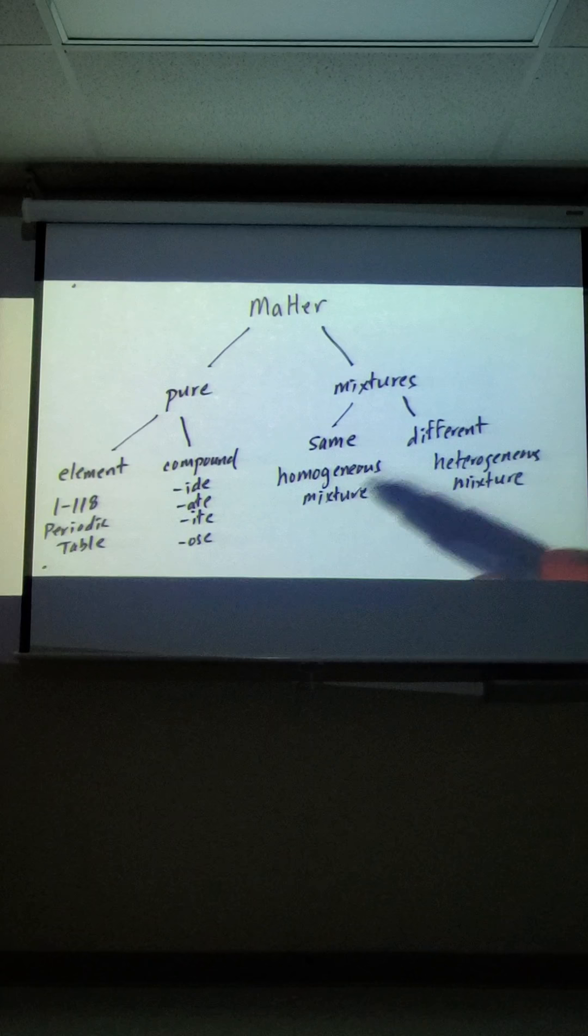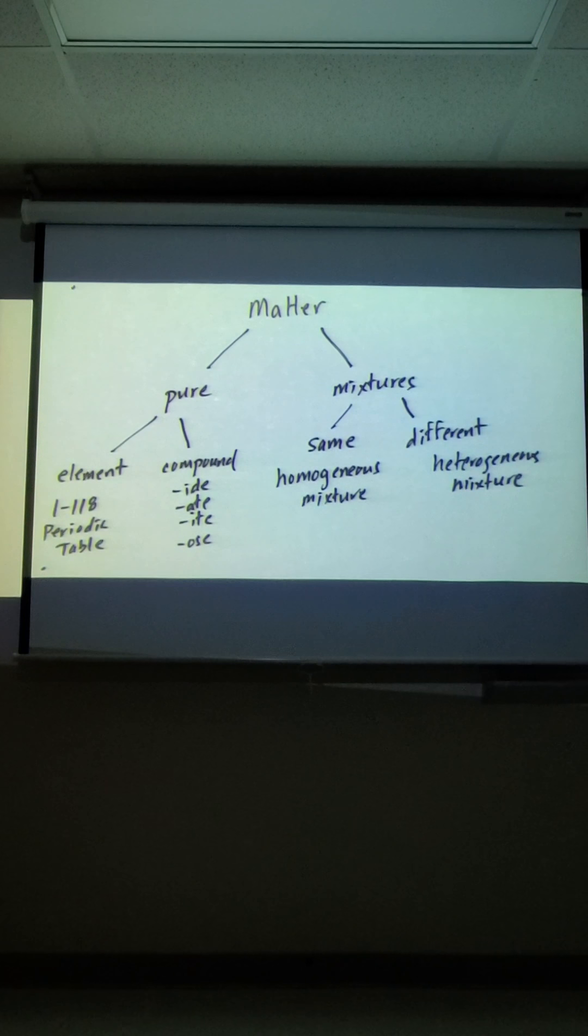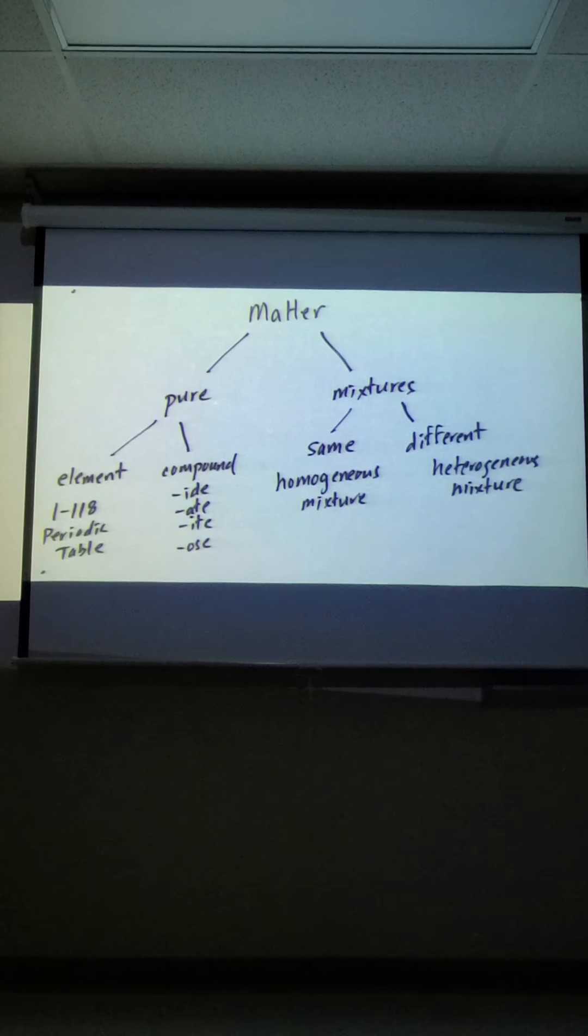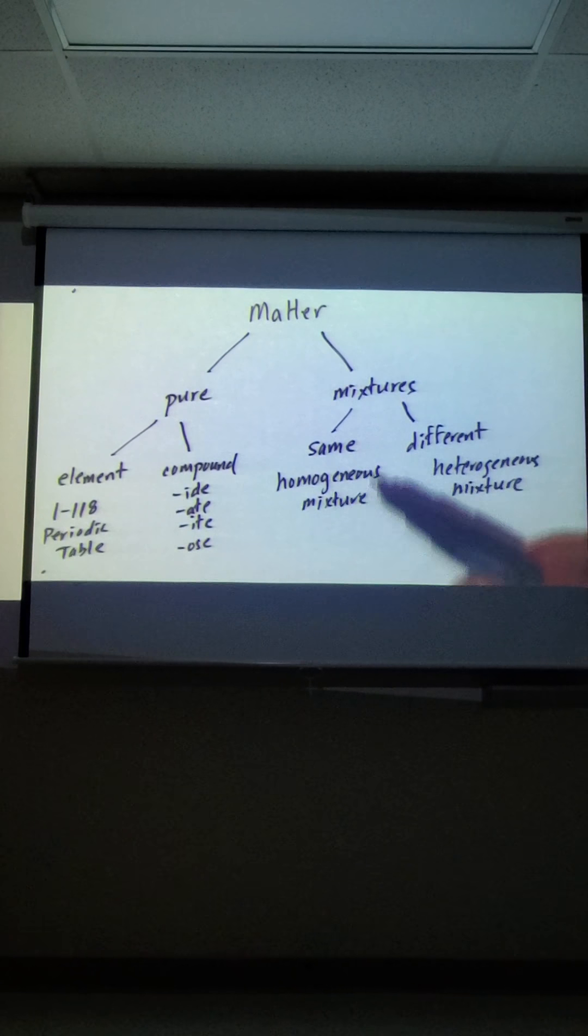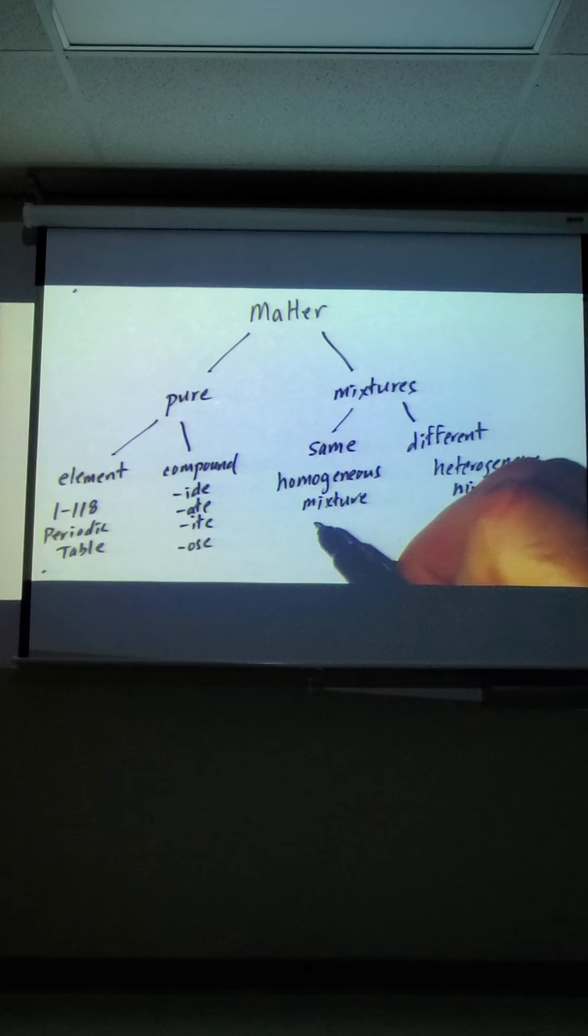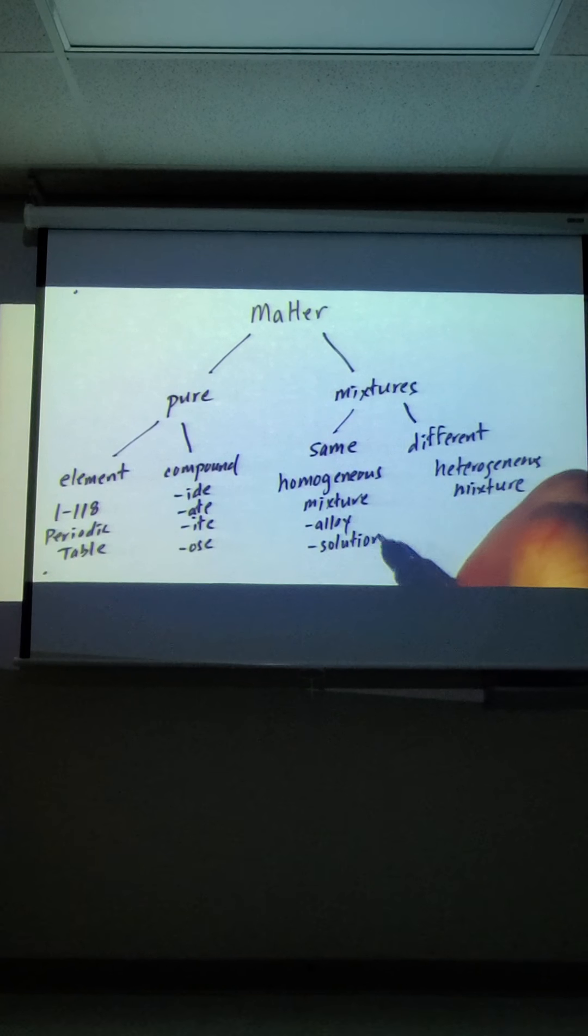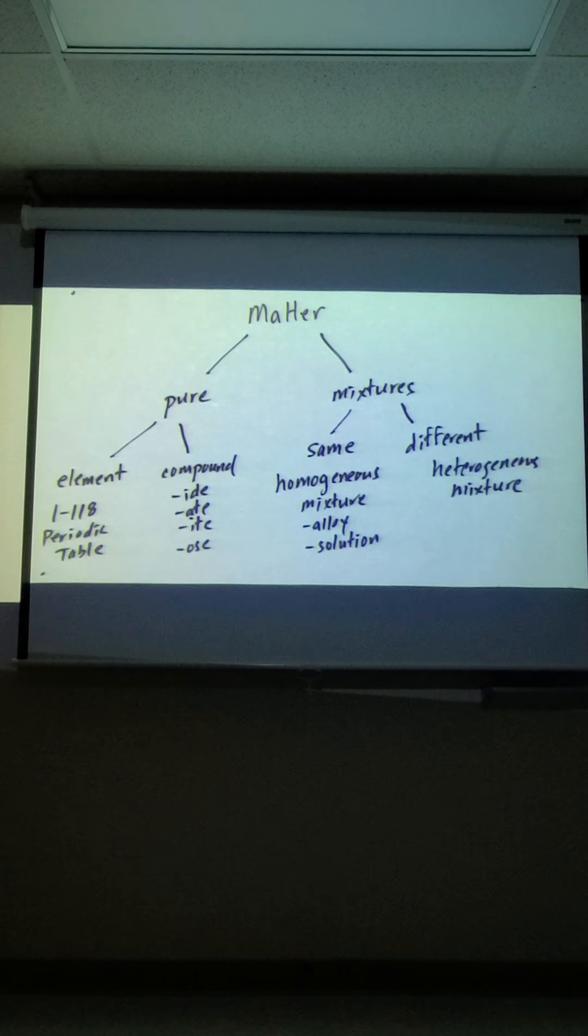Homogeneous mixtures are going to have more than one thing: multiple elements, multiple compounds, or elements and compounds mixed together. The major difference here is that it's still going to look the same when it's done. A couple of synonyms for this are alloy or solution—those are great ways to recognize homogeneous mixtures.